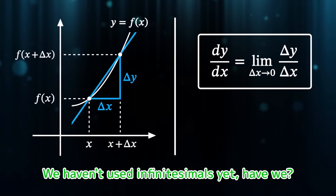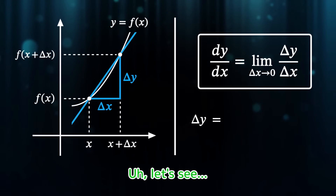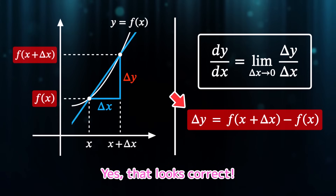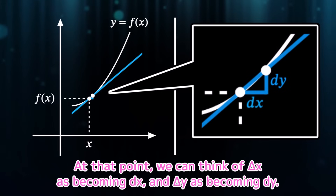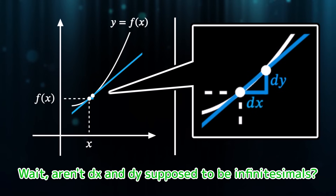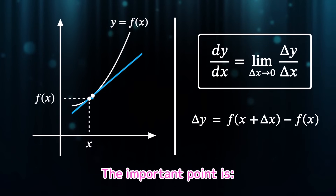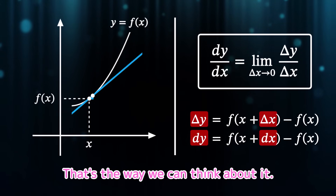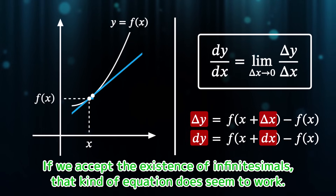We haven't used infinitesimals yet. Can we write delta y more specifically here? Looking at the diagram, delta y is the difference between this point and that one, so we can write it like this. Now, let's think about the case where delta x is very close to zero. At that point, we can think of delta x as becoming dx and delta y as becoming dy. Aren't dx and dy supposed to be infinitesimals? But here they still seem to have finite values. Think of it as just an image. The important point is, if we replace delta x with dx, then delta y can be replaced with dy. If we accept the existence of infinitesimals, that kind of equation does seem to work.